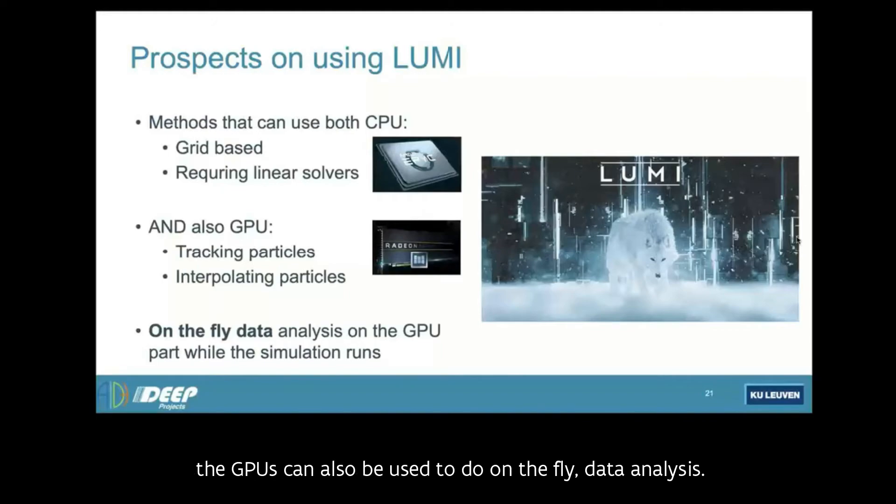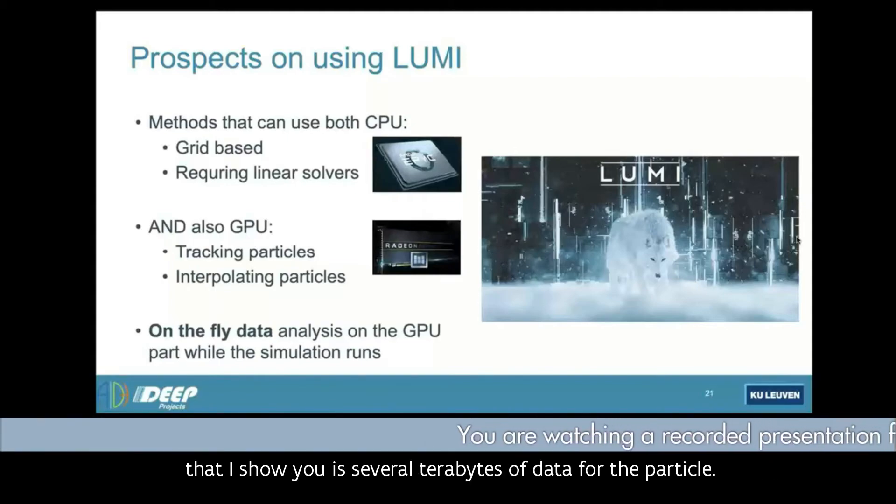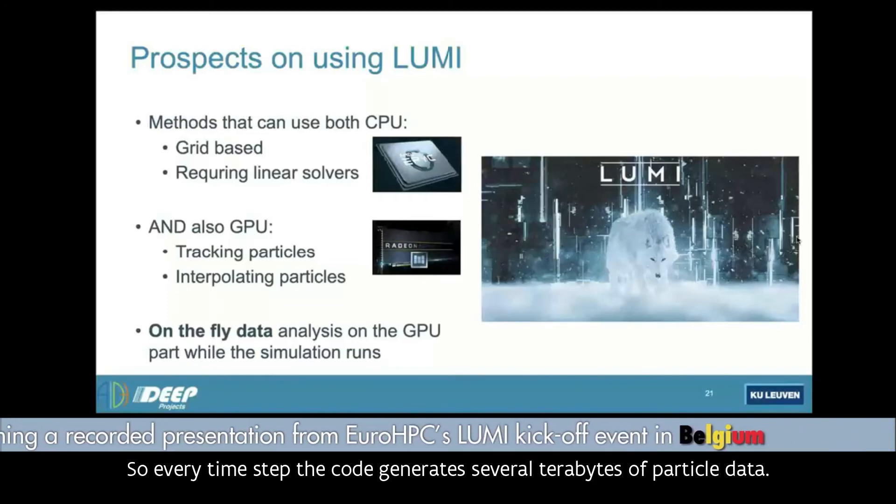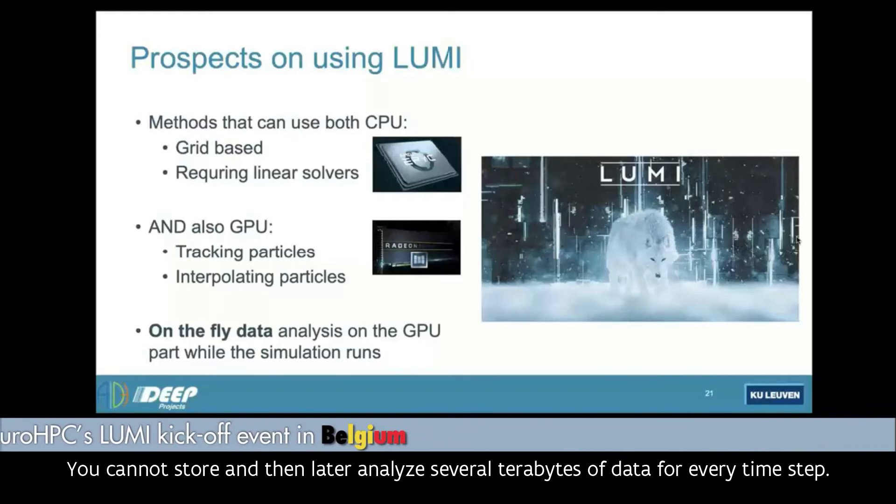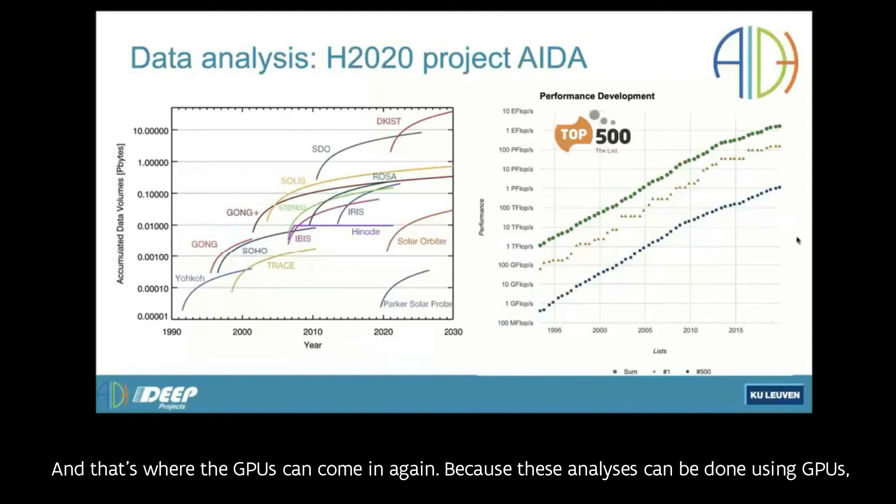And on top of that, the GPUs can also be used to do on-the-fly data analysis. And that's what I will show you next because the on-the-fly data analysis is needed. This simulation saves one time step, for example. Right now in the simulation that I showed you is several terabytes of data for the particle. So every time step the code generates several terabytes of particle data. You cannot store and then later analyze several terabytes for every time step and there are maybe a hundred thousand time steps. So that would reach a tremendous amount of data. So it needs to be done on the fly.